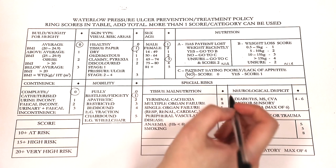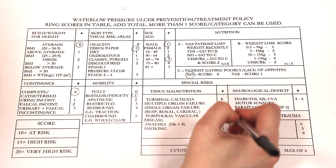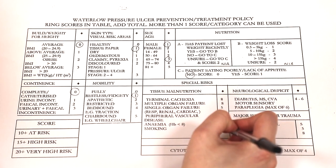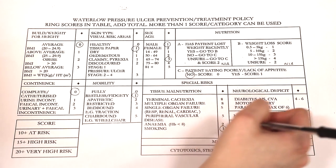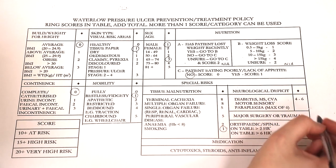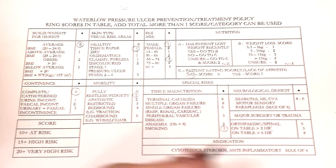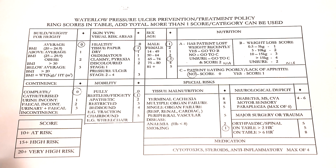Special risks include cachexia, where patients are end of life and experiencing significant weight loss and muscle wasting — this may occur in late stages of diseases such as cancer, COPD or congestive heart failure. Multiple organ failure, including renal, heart or liver failure, is also considered. Additional special risks include peripheral vascular disease (documented in medical notes), anaemia, and current smoking status, regardless of the amount smoked.